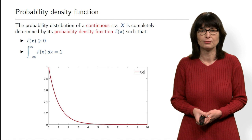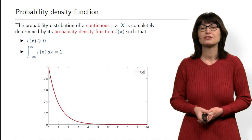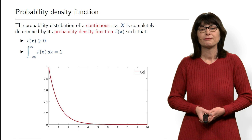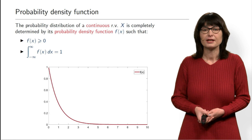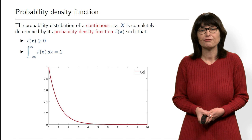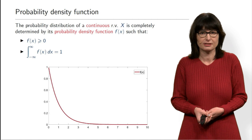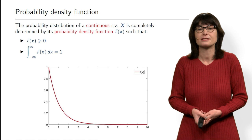Density cannot be negative — it is always greater than or equal to zero. The total probability mass is always 1, which you can think of as the total area under the plot. The probability of being in a small interval dx is f(x)·dx, and the integral is exactly like a sum from calculus. So the second property says that the sum of all probabilities must equal 1 — exactly as in discrete distributions.